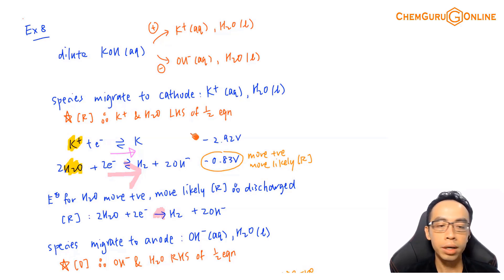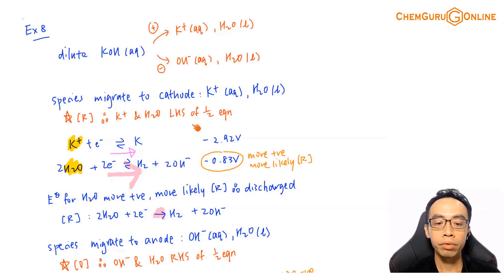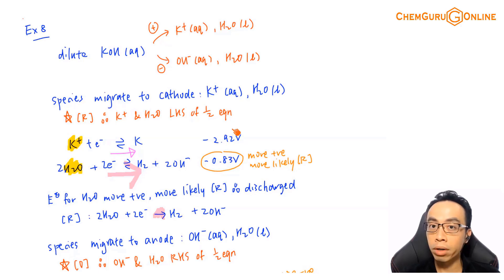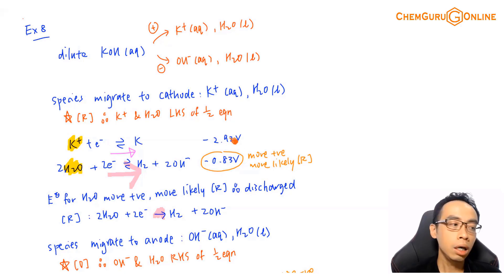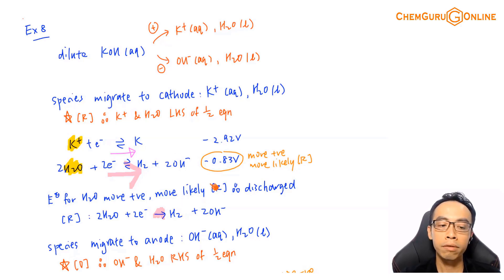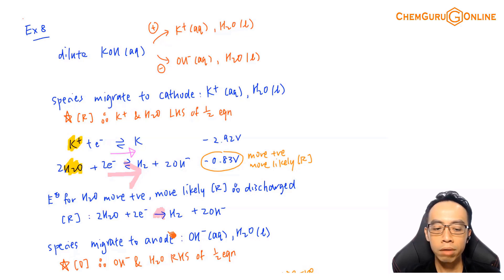At secondary level, we say K+ is stable and will never be discharged, while water will be. This is confirmed here: K+ has a very, very negative E value, making it extremely difficult to reduce — virtually impossible in the presence of water. Instead of memorizing, we compare E values and reach the same conclusion. The secondary-level rule about K+ stability and the E value comparison give the same outcome.